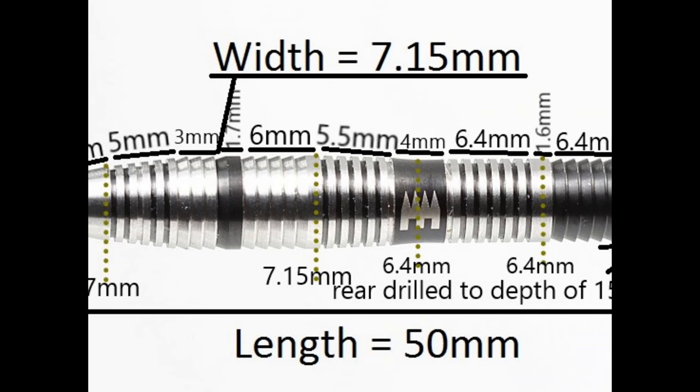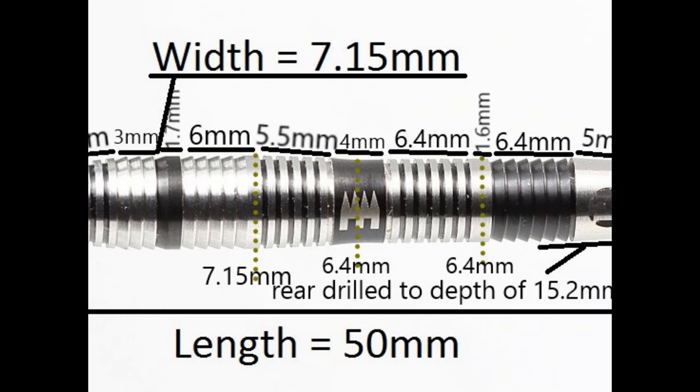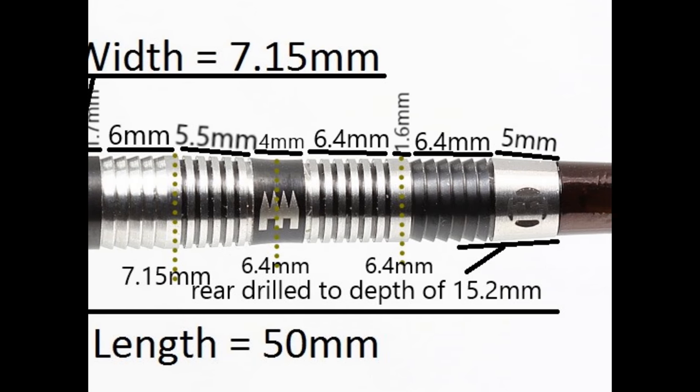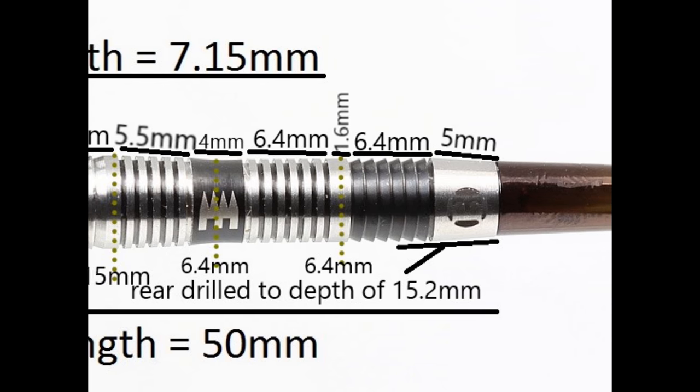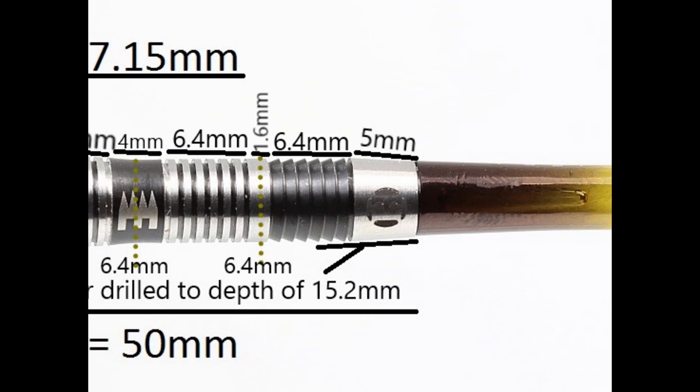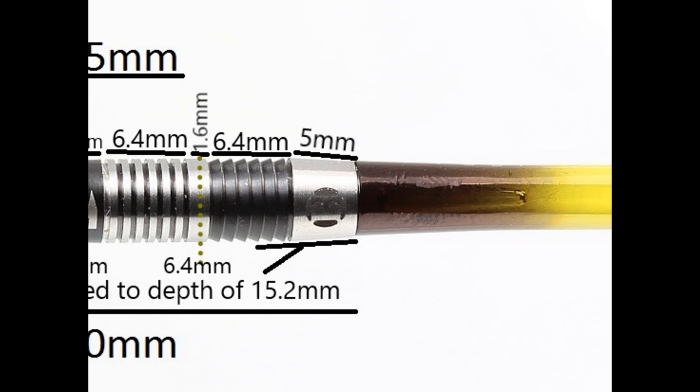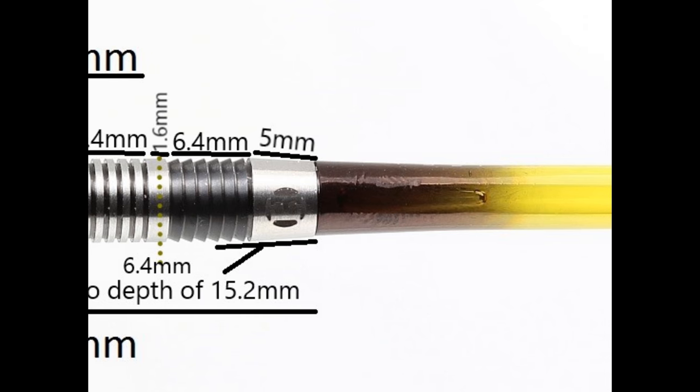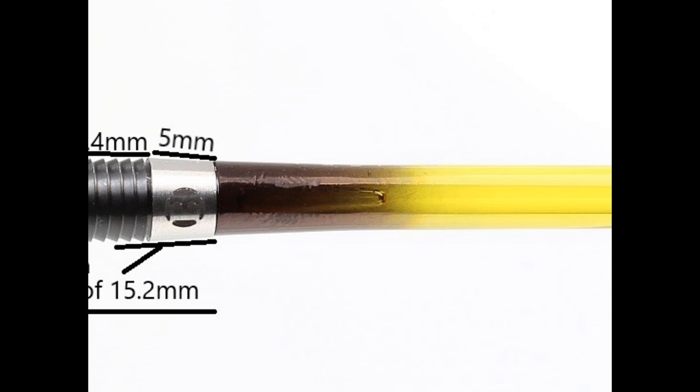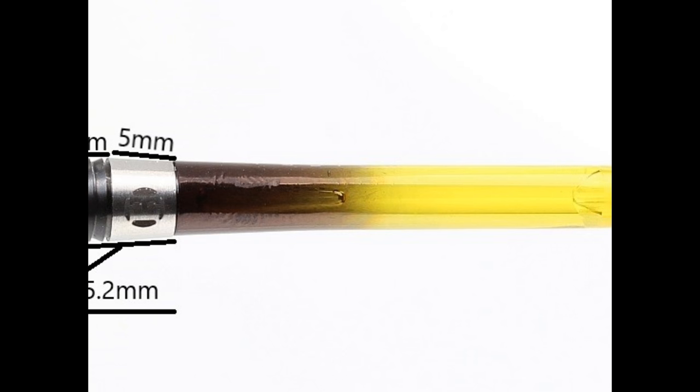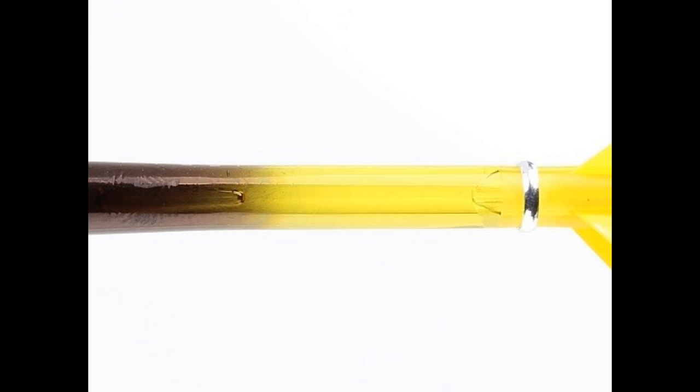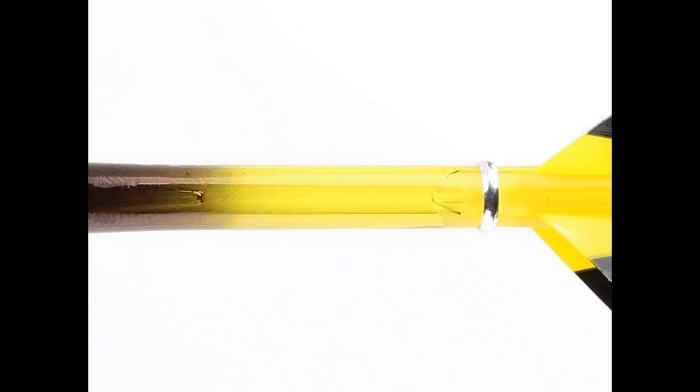Then more of the razor grip which is about 6mm wide including the little ring at the end. Then the rings slope towards the middle at 5.5mm wide and you've got a smooth black band which has a slight scallop in it, that's 4mm wide. Then more of the thin cut ring grip of 6.4mm, then a band of 1.6mm, followed by another 6.4mm of razor grip, and a smooth section at the end of 5mm. The length is 50mm and the width is 7.15mm.